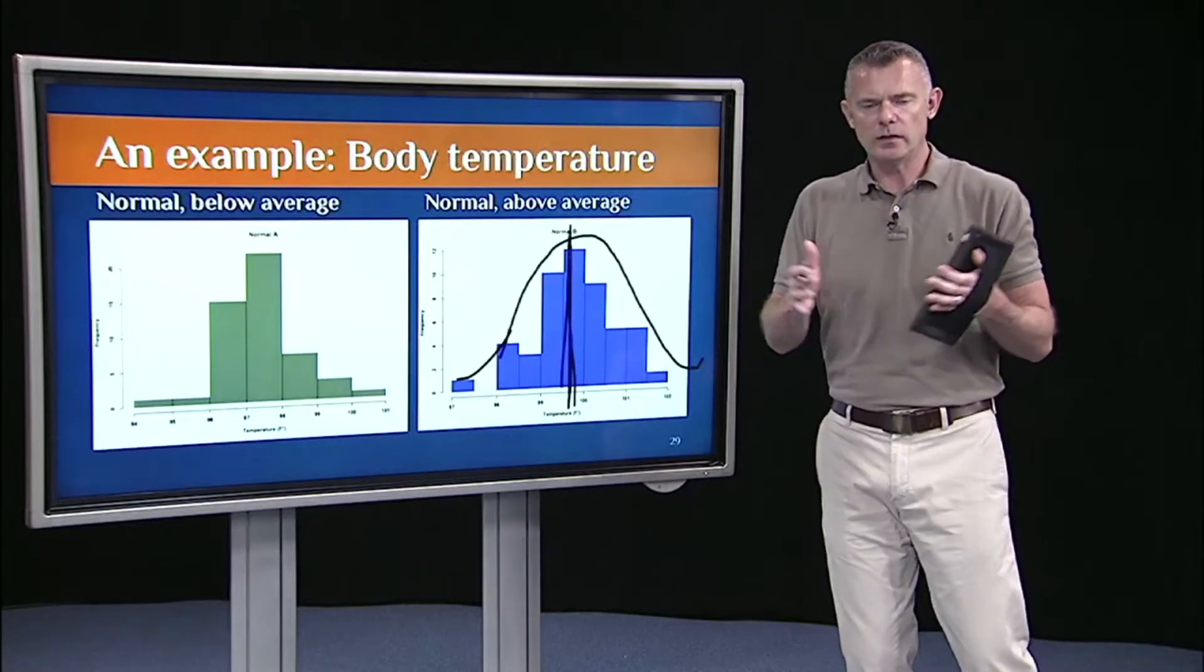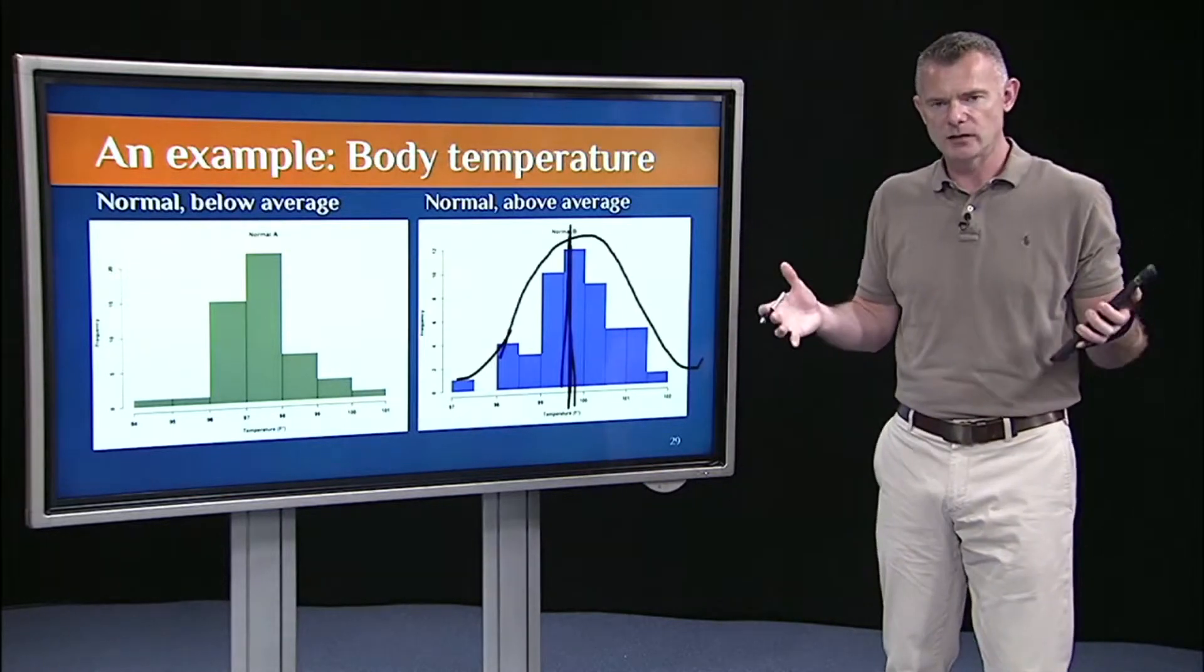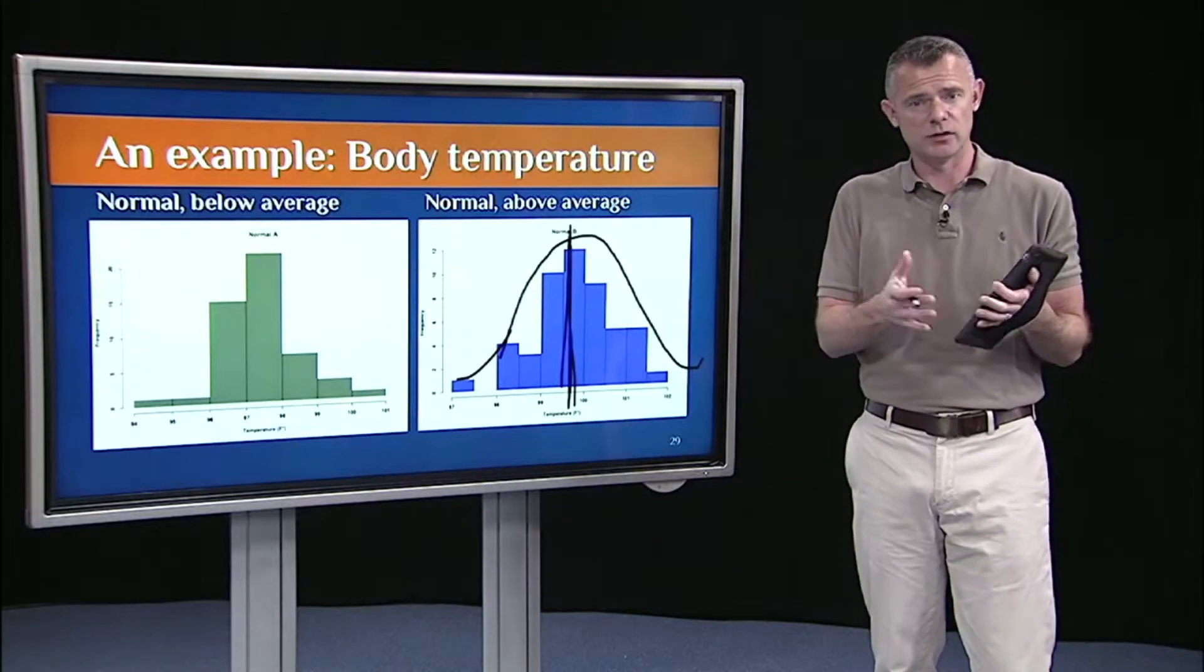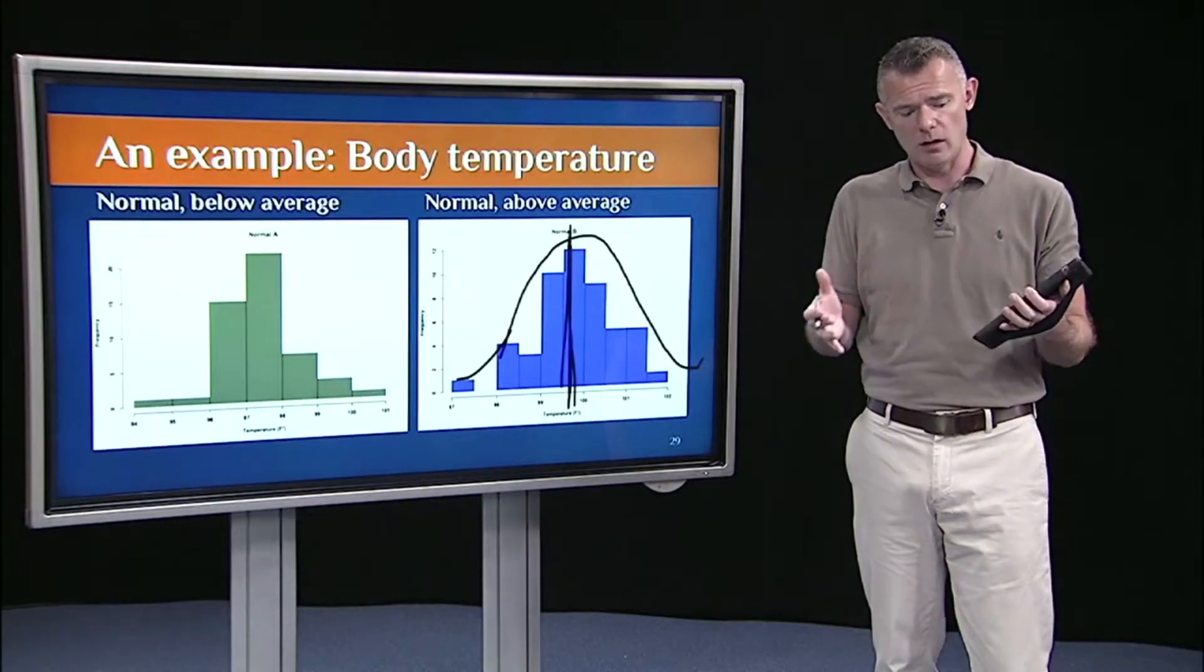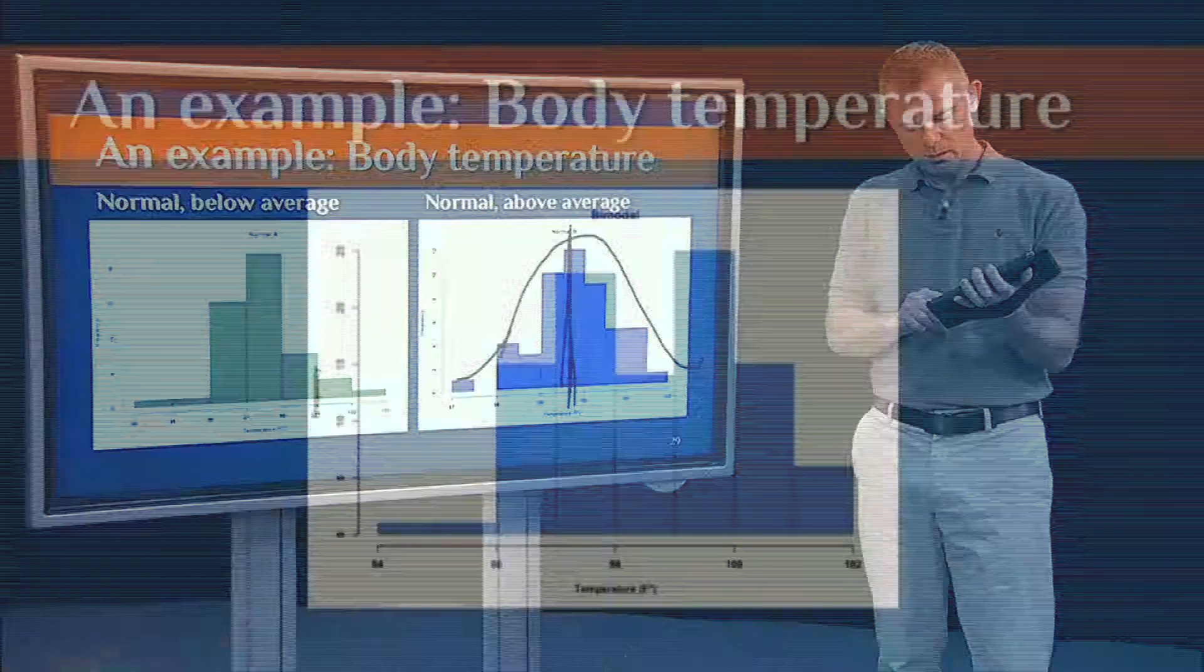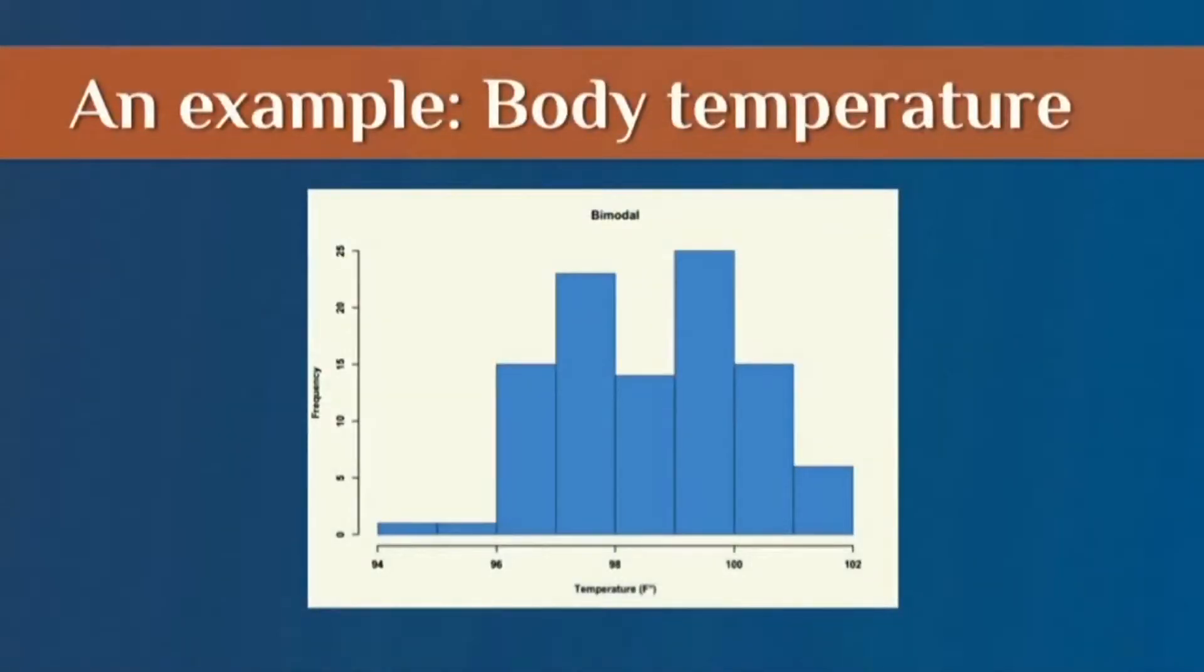Imagine that I didn't know that these were two separate classrooms of children. Imagine I just looked at their body temperatures and plotted the histogram, all of them together. So let's put them together. If we put those two distributions together, the group of children who are on the antibiotics and their body temperature is a little bit below average, with the group of the children who are still sick and haven't received the antibiotics, their body temperature is still above normal, what you'll see is a distribution that looks like this. It's actually bimodal, meaning it has two modes.